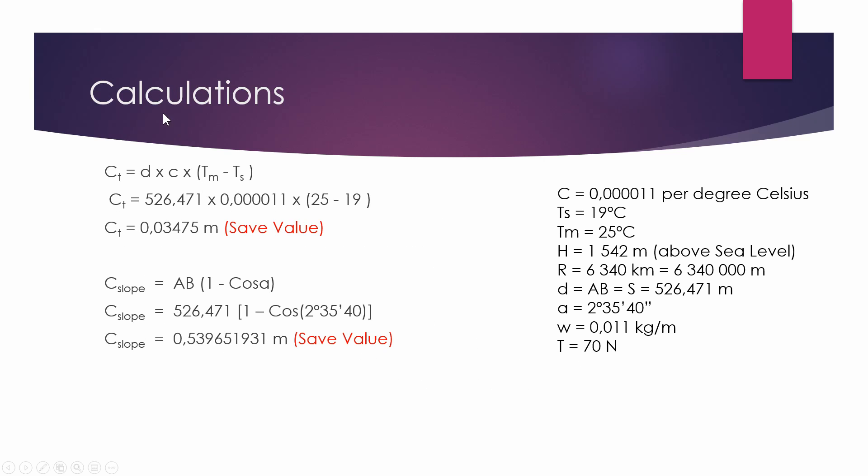So we're going to start with our temperature calculations. We simply put in our D, so our 526.471 times our 0.00011, which is our C value. And then times by the temperature measured, which is 25 minus the standard temperature, which is 19. Then that's your answer in meters. We save that value either in the calculator or in the Excel sheet, whatever you were using.